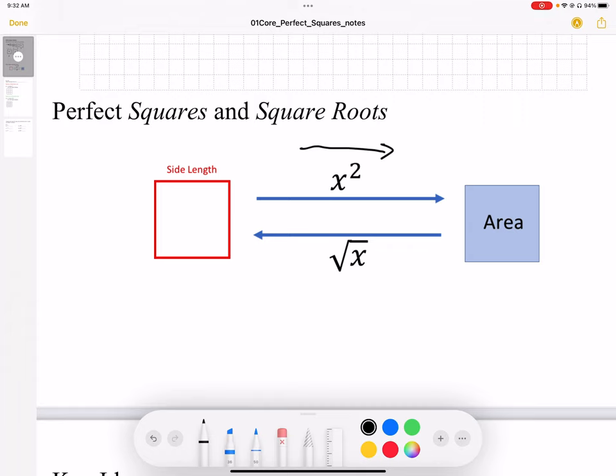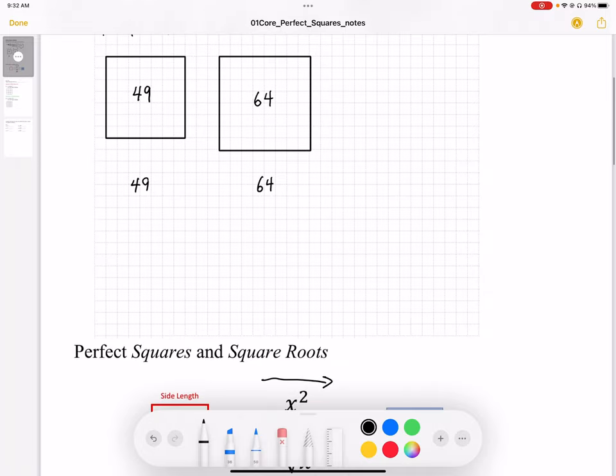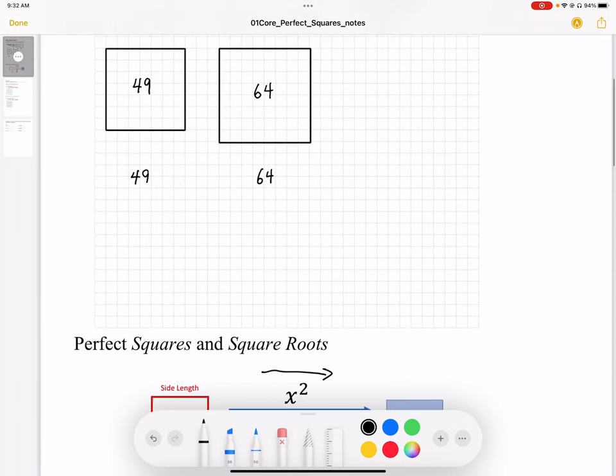For example, if I do square root of 64, I'm going to take this area of 64 squares and end up with a side length of 8 squares. So when I square root 64, I end up with this side length on that perfect square of 8. I start with my square of 64, I square root it, and I get 8.